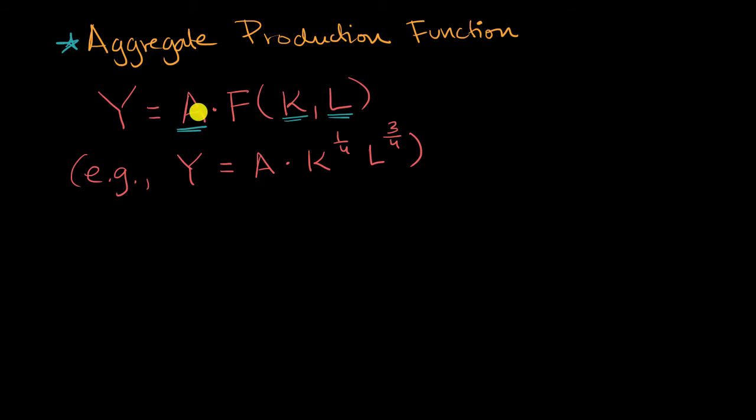Just to make this tangible, because it's written in function notation here which might seem a little bit abstract, just saying some function of K and L, you could imagine an aggregate production function that looks like this, where our aggregate output equals our total factor productivity, which is once again a measure of our technology, times our capital to some power, times our human capital to some other power.